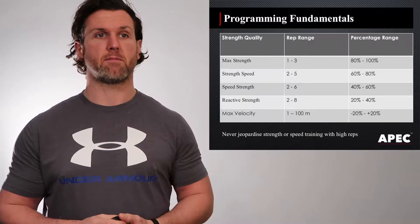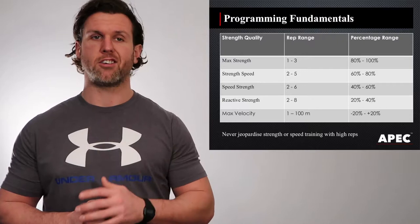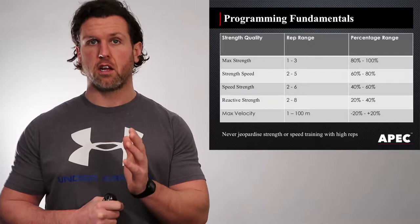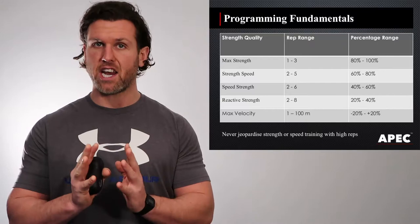When it comes to max strength, the rep range that we normally use is one to three repetitions. When we look at the percentage method, we like the athlete to be training between 80% to 100% of their one repetition max. When we're trying to develop a strength-speed quality, the rep range that is normally best developed is from two to five repetitions, at 60% to 80% of our one repetition max.